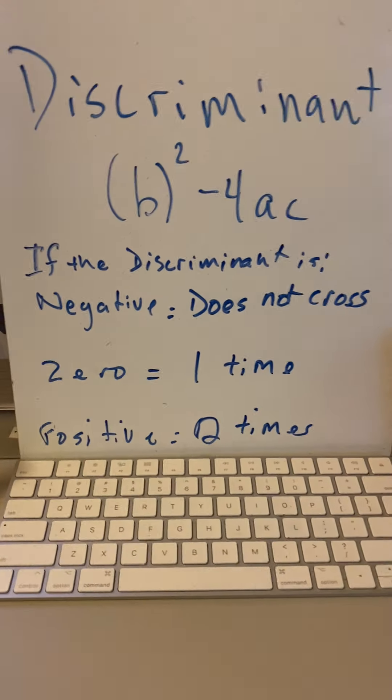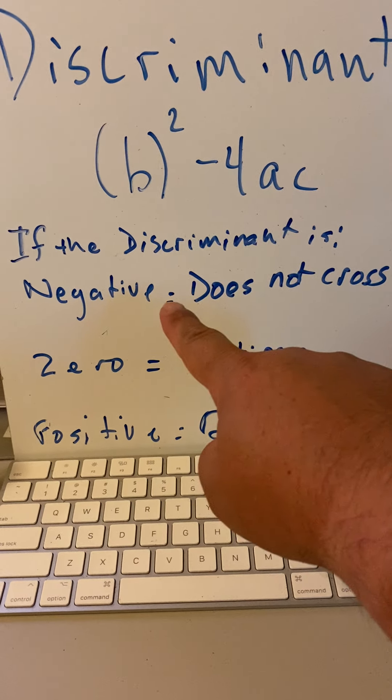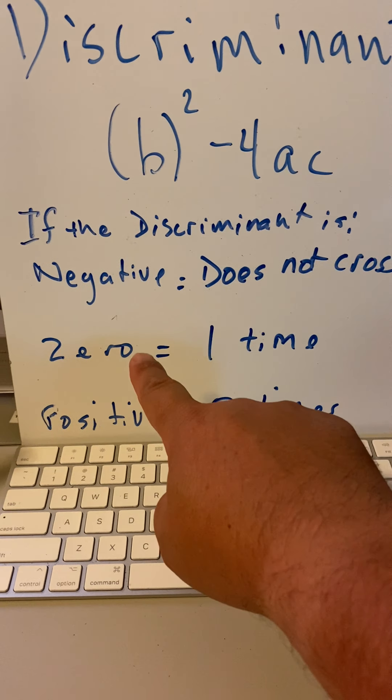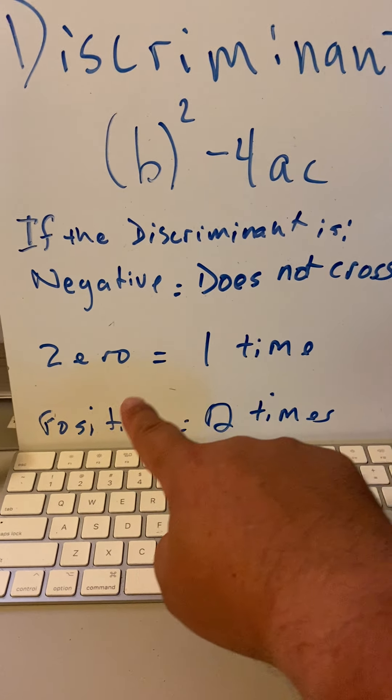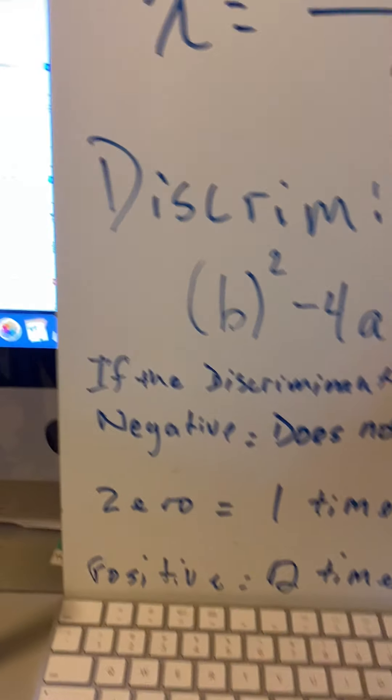So back up so you can get that. If the discriminant is negative, it doesn't cross the x-axis. If it's zero, it crosses it once. If it's positive, it crosses it twice.